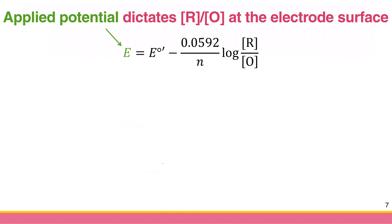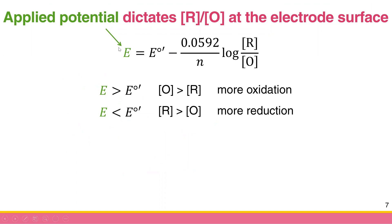In general, if the applied potential is higher than the formal potential or standard electrode potential, you get more oxidation, resulting in more oxidized species than reduced species. Conversely, if the electrode potential is lower than the formal potential, more reduction occurs and the concentration of reduced species exceeds that of oxidized species. This is confirmed by the example calculations. Going forward, we will call this the applied potential.